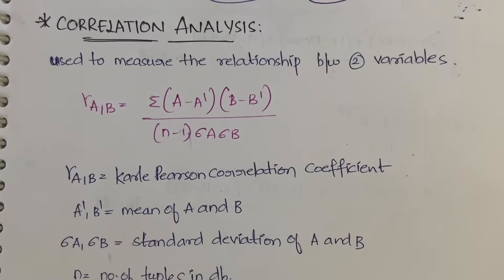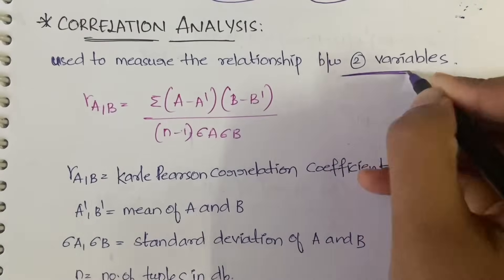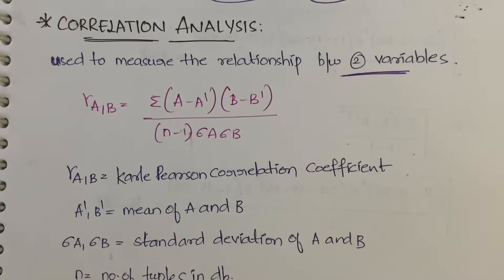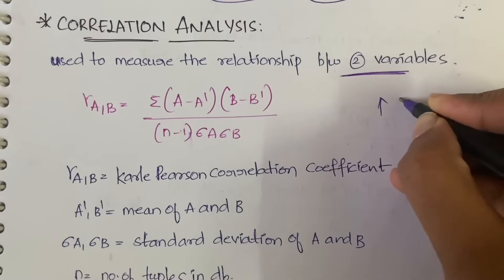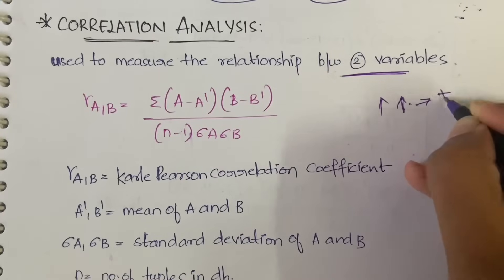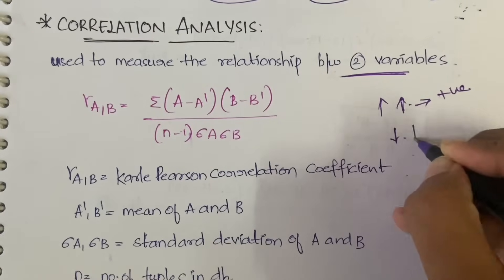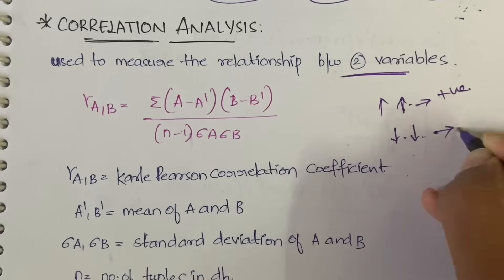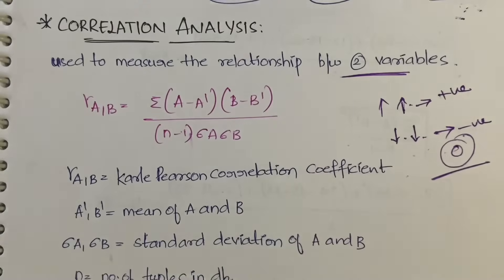Correlation analysis is basically used to measure the relationship between two variables. If one variable increases and the other variable also increases, it is called positive correlation. If one variable is decreasing and the other is also decreasing, it is called negative correlation. If there is no relationship, it is called zero correlation.